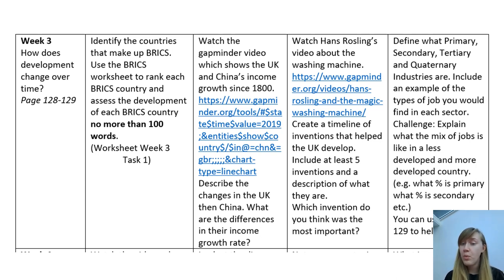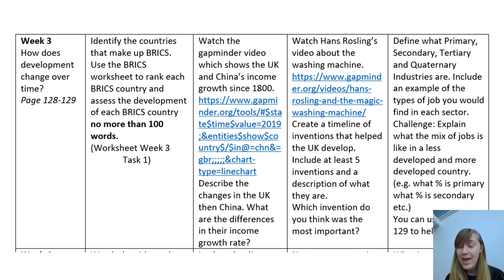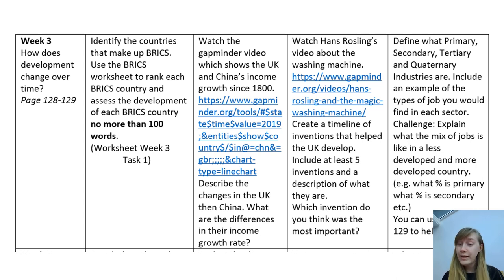For task four, I've talked a little about primary, secondary, tertiary and quaternary. Define those four industries and include an example of the type of job found in each sector — for example, primary industry might be farming. For the challenge, explain what the mix of jobs is like in a less developed and a more developed country, similar to those pie charts shown earlier, stating what percentage is in each sector. You can use pages 128 to 129 to help. For an extra challenge, try not to use the UK or China as your examples.